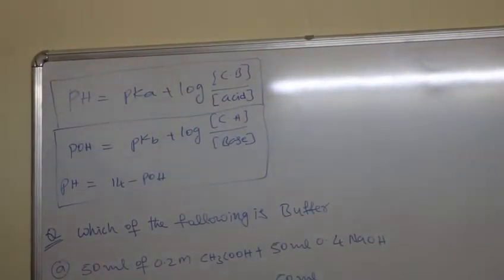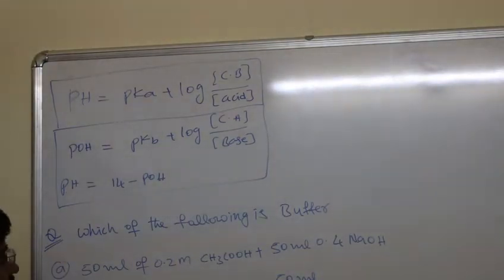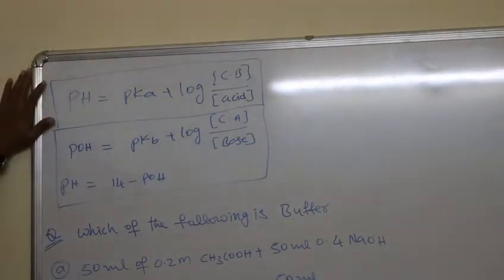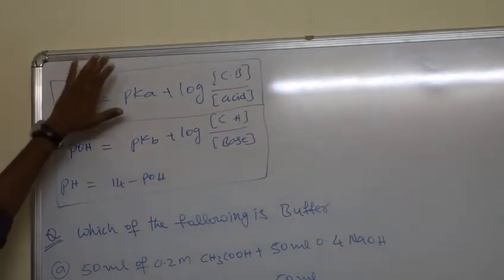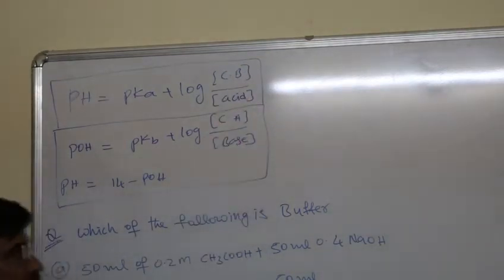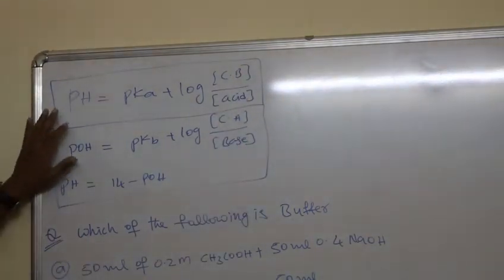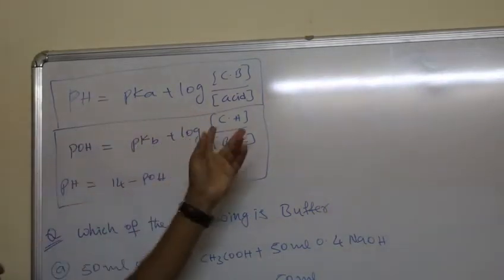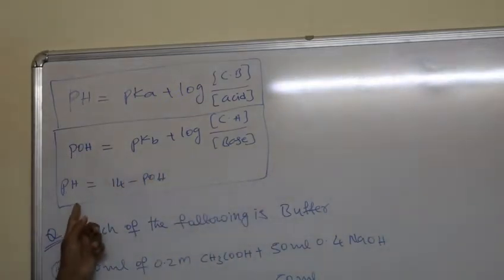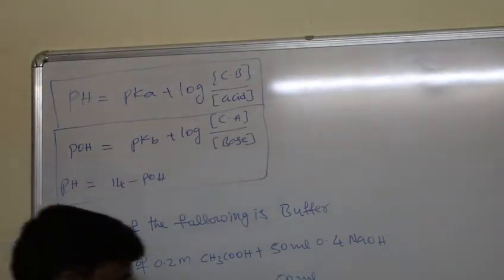In the last class we discussed basic buffer solutions. Now let's solve problems based on buffer solutions using the formulas derived in the last class. For acidic buffer solution, pH equals pKa plus log of concentration of conjugated base by concentration of acid. For basic buffer solution, pOH equals pKb plus log of concentration of conjugated acid by concentration of base. For pH we do 14 minus pOH.